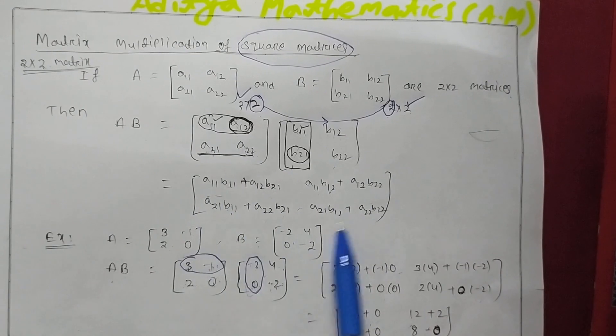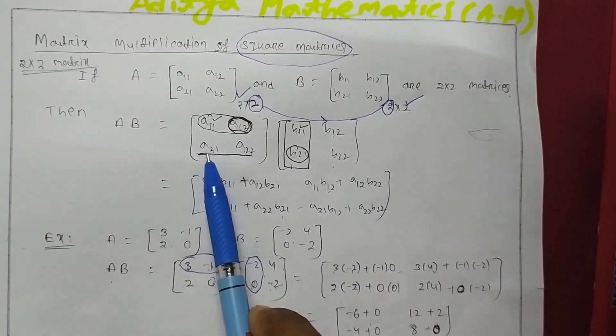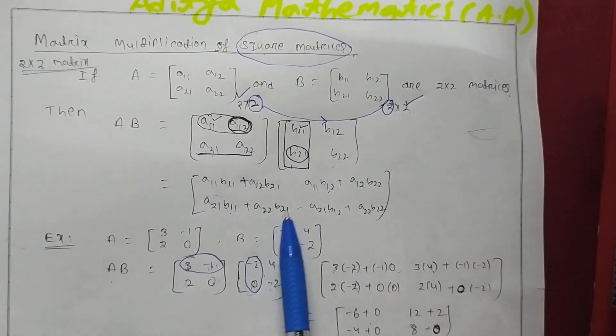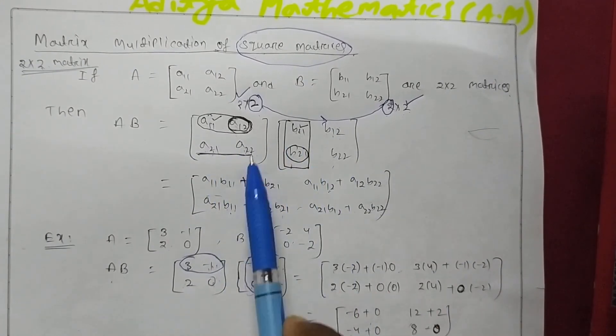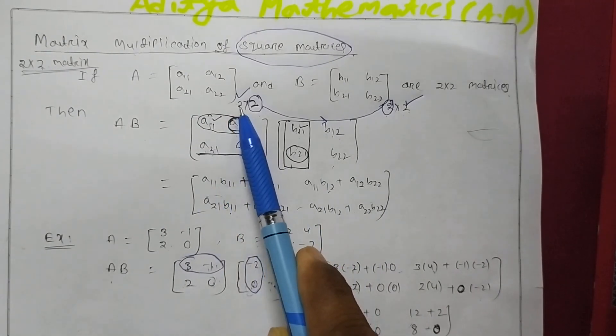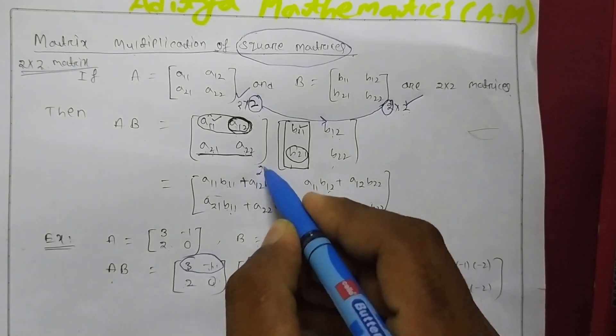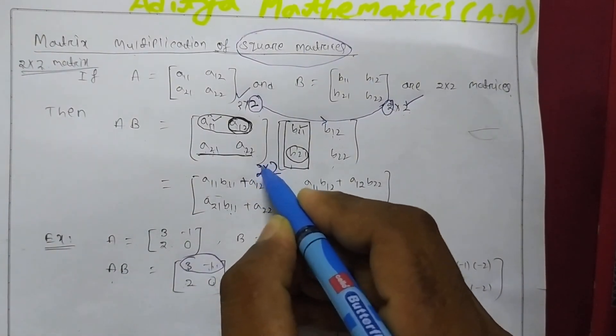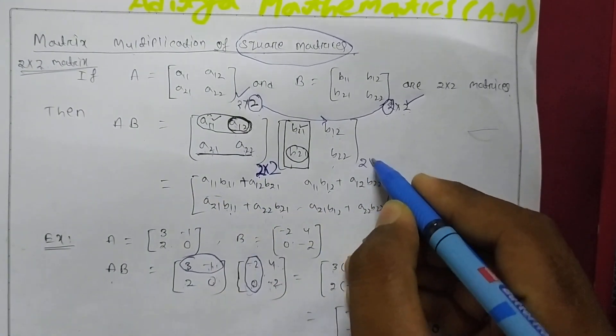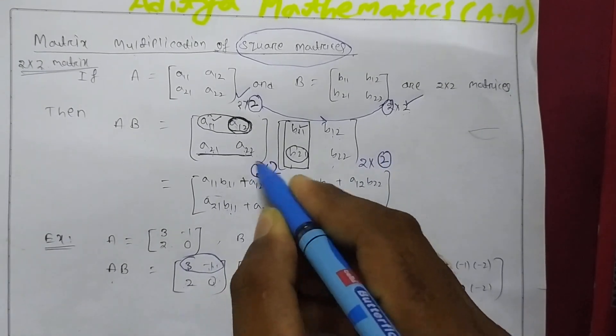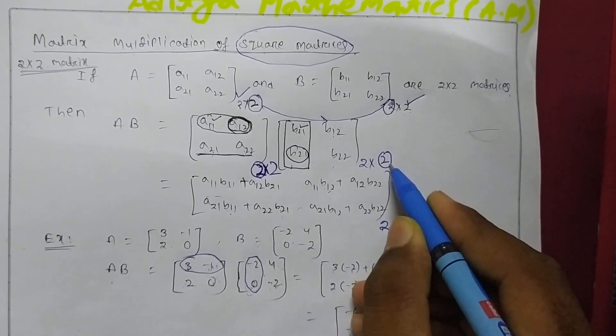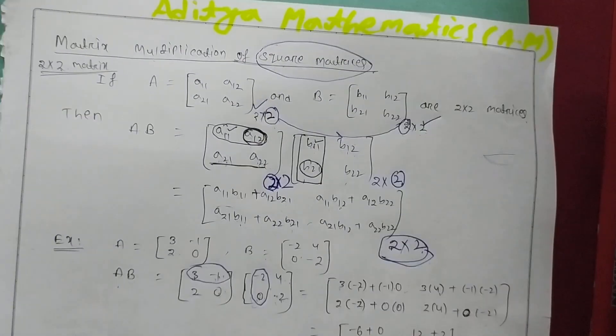Then you have to get second row. How to get second row? Multiply similarly second row of first matrix to both columns of second matrix. A21 B11, A22 B21, okay. Similarly the second element, A21 B12 and A22 B22. Again I am saying how to get order: first row of first matrix, you can see here first row of first matrix is the number of row of first matrix is 2, you are getting 2, there are 2 rows. And the number of columns of second matrix, number of rows of first matrix, number of columns of second matrix is the order of multiplication matrix.